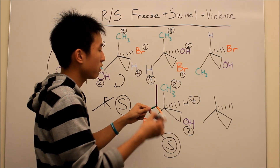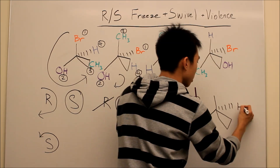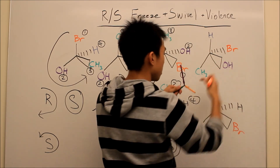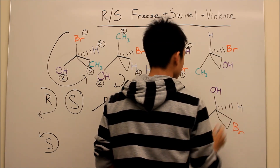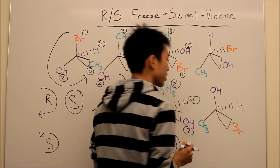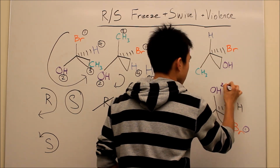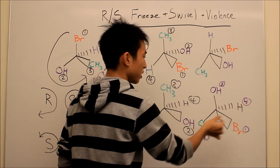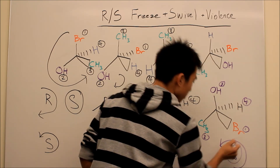You can also think of it as freeze and swivel, but you're freezing the CH3. So hydrogen is now in the back, bromine is in the front, OH is now on top, and CH3 is still there chilling. Let's carry over our rankings: 1, 2, 3, 4. Lowest group is in the back, so we're good. Going 1, 2, 3 — that's counterclockwise. Counterclockwise is S. There you go, that's your answer.